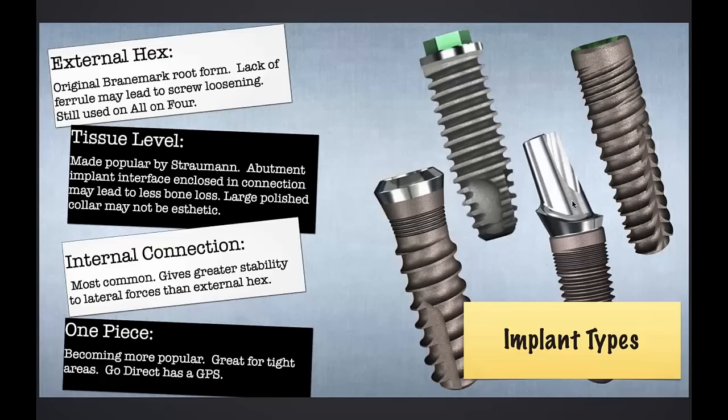One-piece implants are interesting — they wax and wane in popularity. With a one-piece implant, you have an abutment or attachment that is permanently welded to the implant. The discussion today is really centered about abutments and micro-movements. If we wanted to emulate anything with our abutments, we would want to emulate the one-piece implant, where the abutment does not move. One-piece implants have their use in dentistry; I've only used them in lower anteriors and lateral incisors.